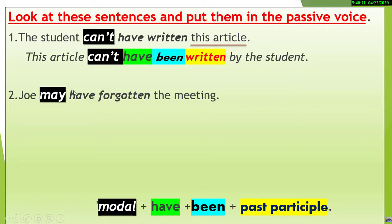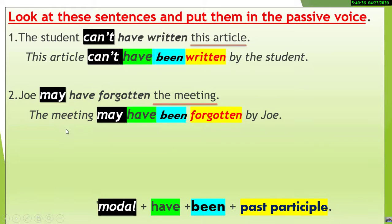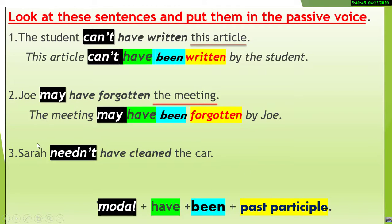Sentence two: 'Joe may have forgotten the meeting.' The modal 'may' expresses possibility in the past, with the perfect infinitive 'have forgotten.' The object is 'the meeting.' Applying modal + have + been + past participle, we get: 'The meeting may have been forgotten by Joe.'